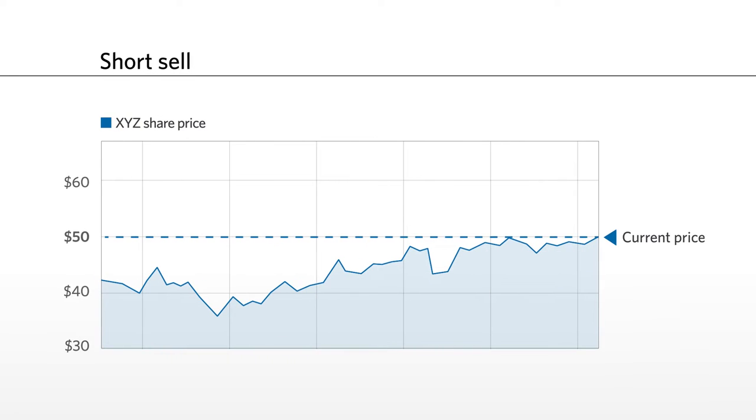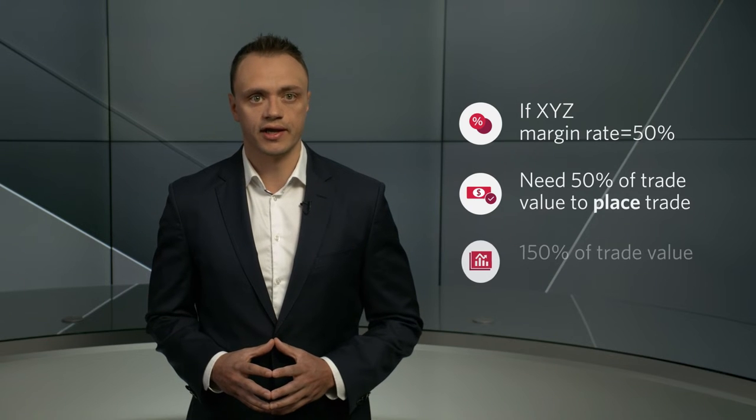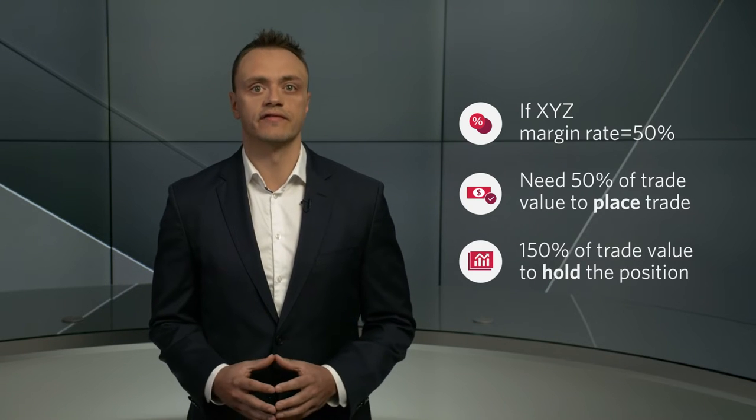You've spotted a stock XYZ that you think is overpriced. XYZ is currently trading at $50, so you enter an order to short sell 100 shares at $50. The margin rate of the stock will determine how much you'll need initially. If the margin rate is 50%, you'll need 50% of the trade value already in your account when you place the trade, and 150% of the value to hold the position. That could be cash, other marginal securities, or a combination of both.